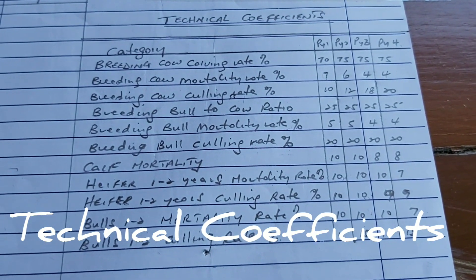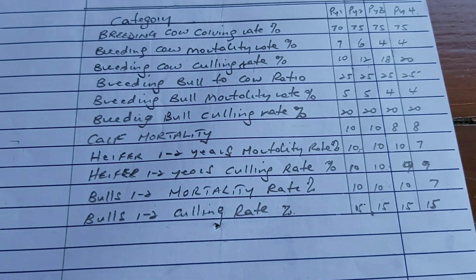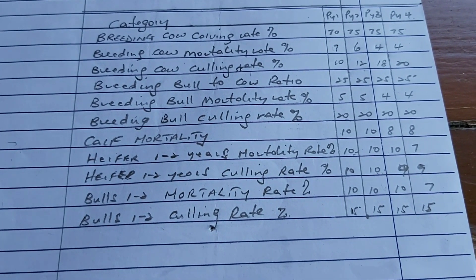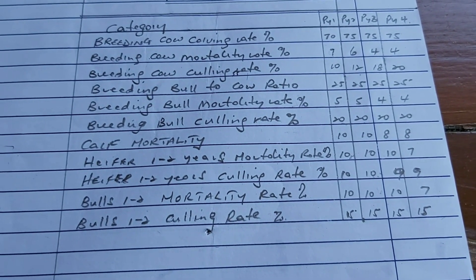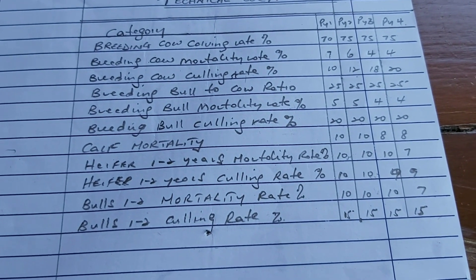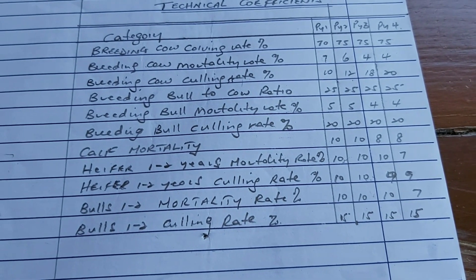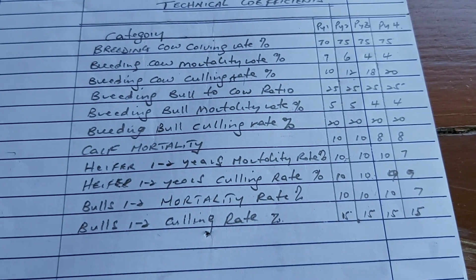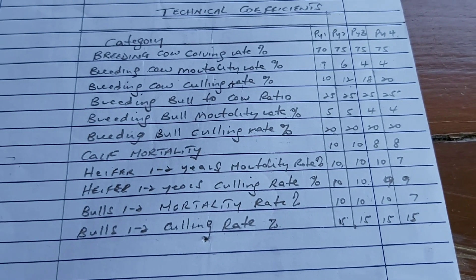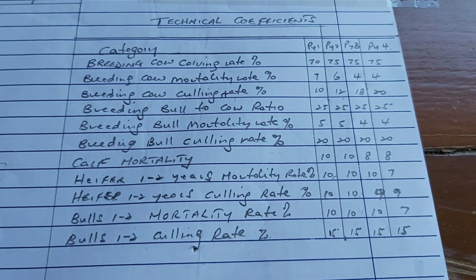The controlling factor at this stage is the technical coefficients. We have: breeding cow calving rate, breeding cow mortality rate, breeding cow culling rate, breeding bull-to-cow ratio, breeding bull mortality rate, breeding bull culling rate, calf mortality, heifers one-to-two mortality rates, heifers one-to-two culling rates, and bulls one-to-two culling rate.